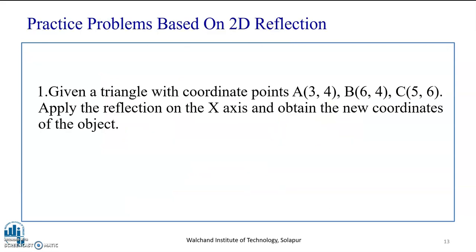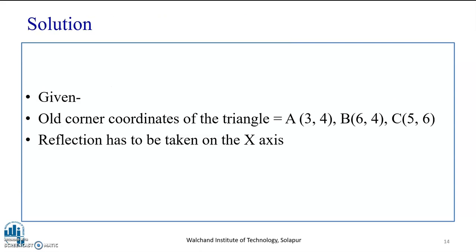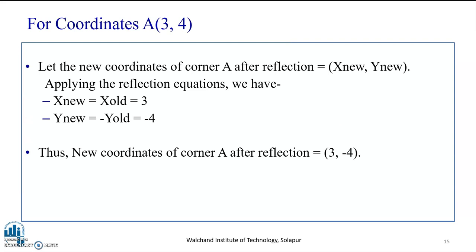Now we move ahead with practice problems based on 2D reflection. Given a triangle with coordinate points A(3,4), B(6,4), and C(5,6), we apply reflection on the x-axis and obtain the new coordinates. Applying the reflection equation to point A(3,4): x-new equals x-old equals 3, and y-new equals minus y-old equals minus 4. So the new coordinates for corner A after reflection are (3, -4).